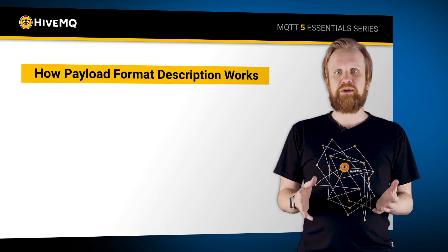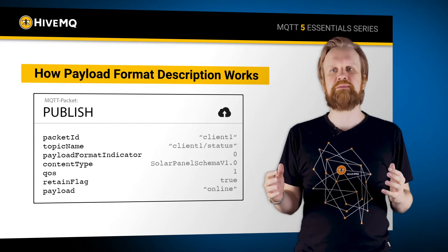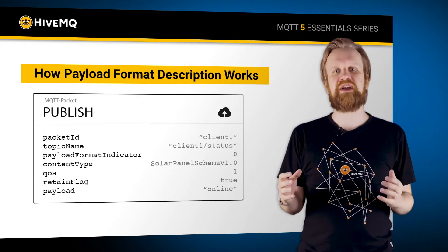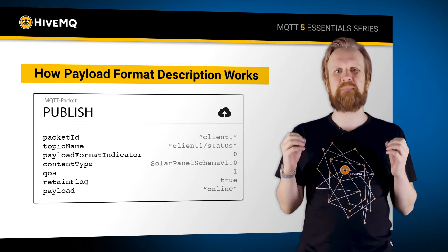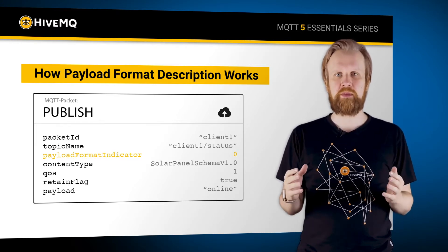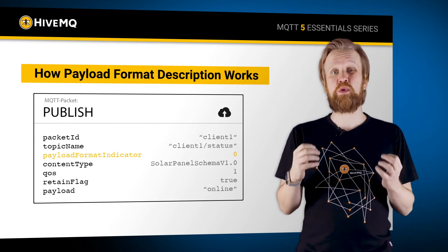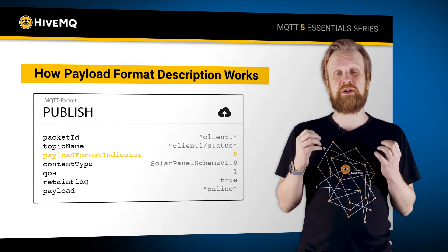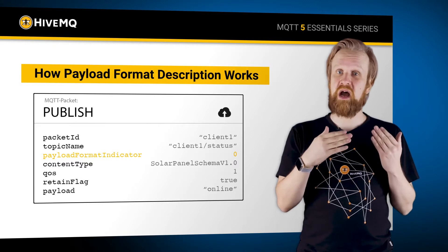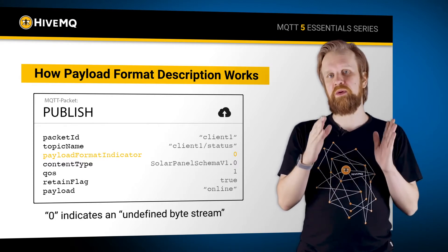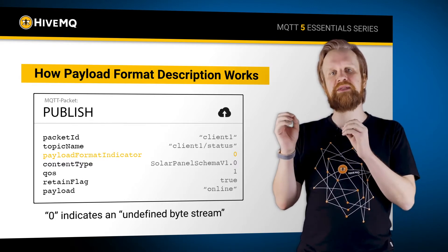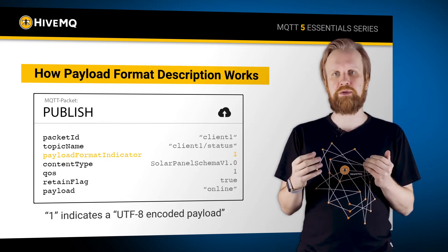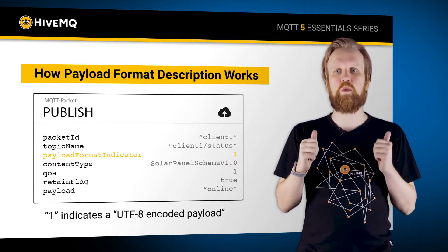But how does it work? There are two attributes in the publish packet. The first of these attributes is the so-called payload format indicator. It is a boolean value that describes whether the payload is an undefined byte stream, represented by the byte 0, or a UTF-8 encoded payload, represented by the byte 1.